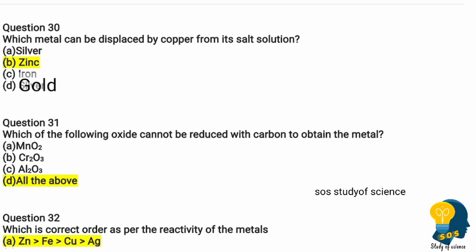Question thirty: which metal can be displaced by copper from its salt solution? Options are silver, zinc, and iron. The correct answer is zinc — zinc can displace copper from its salt solution. Questions 31 to 70 will be continued in the next video. If you found this video useful, kindly forward these MCQ questions to your friends. Thank you for watching.